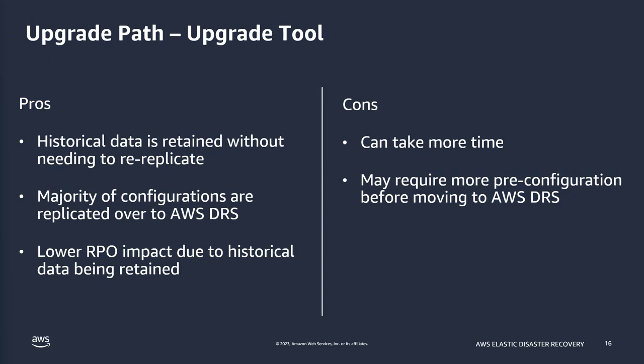The key benefits of the upgrade tool are that your historical data is retained without needing to re-replicate it, the majority of configurations carry over to Elastic Disaster Recovery, and there is lower RPO impact because historical snapshots are retained and only the changes since the upgrade started need to be replicated. The cons are that it can take more time than a clean install and may require more pre-configuration before moving to AWS Elastic Disaster Recovery.